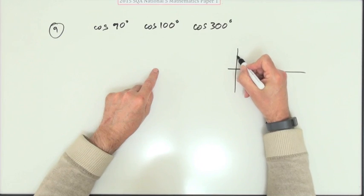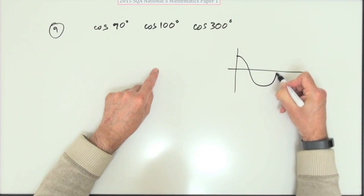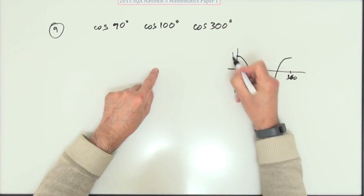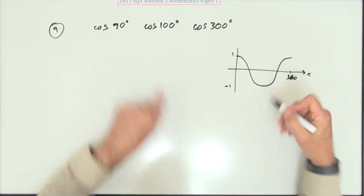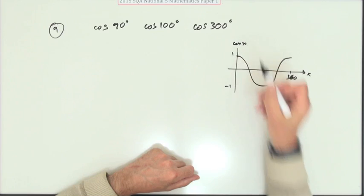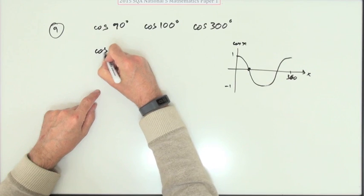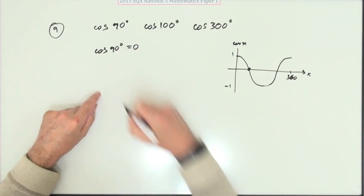Well, the easiest way to see that is just think of the cosine graph. What does it look like? It starts at 1. It goes down to negative 1 and then back up again by 360. So, and there's cos x. Cos 90, that's here. Well, cos 90 is worth 0.